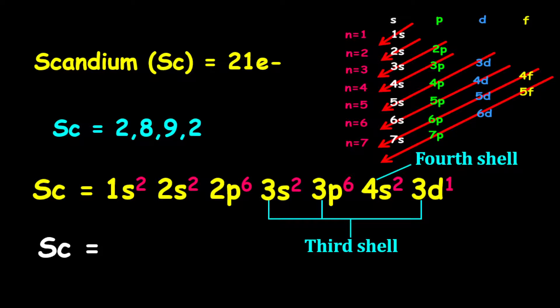For the shortened electron configuration, it is given as argon, and argon will be followed by 4s2, then we have 3d1.